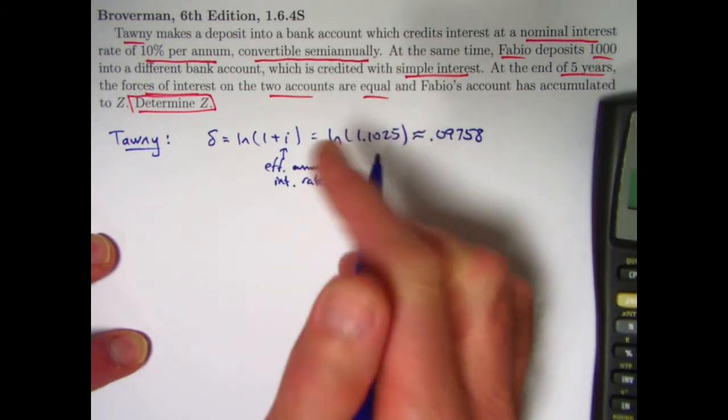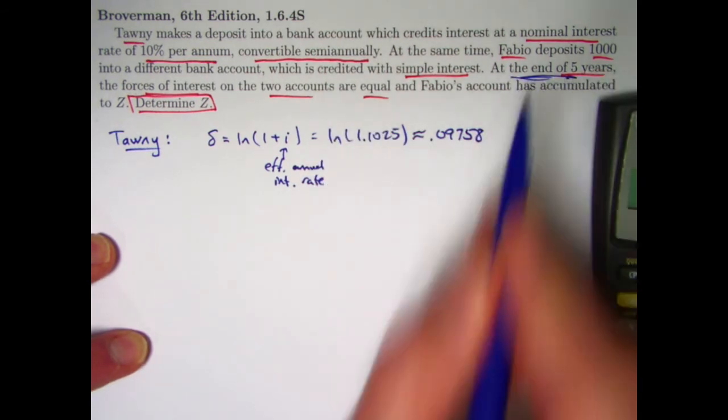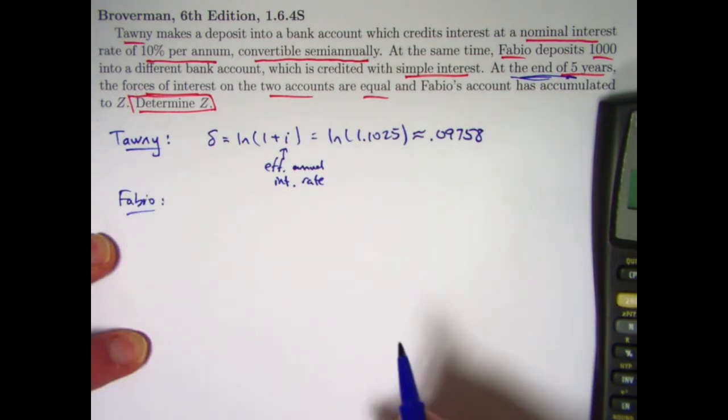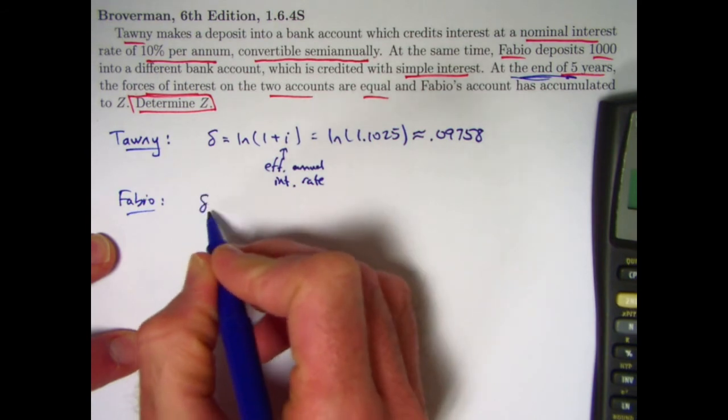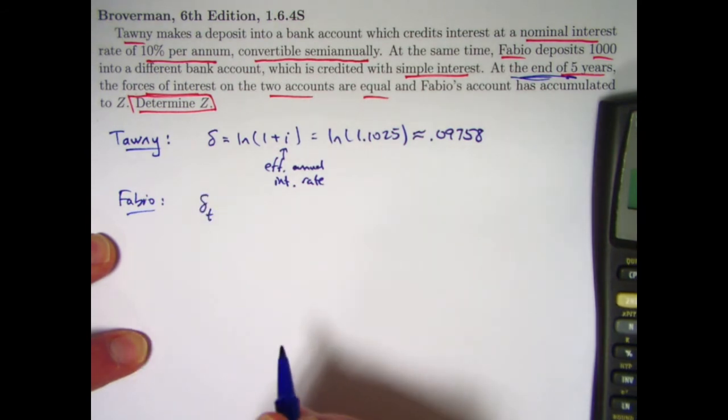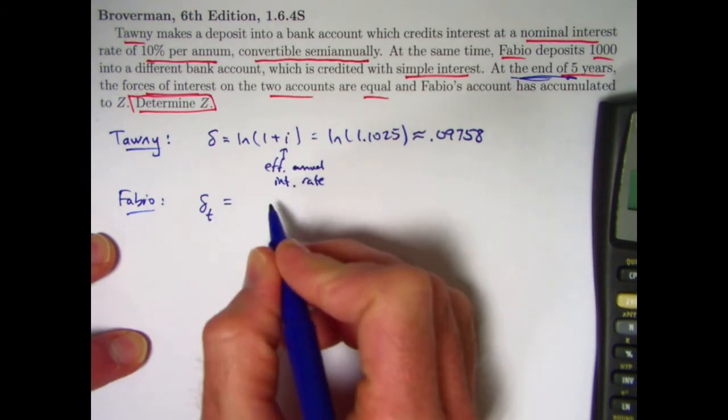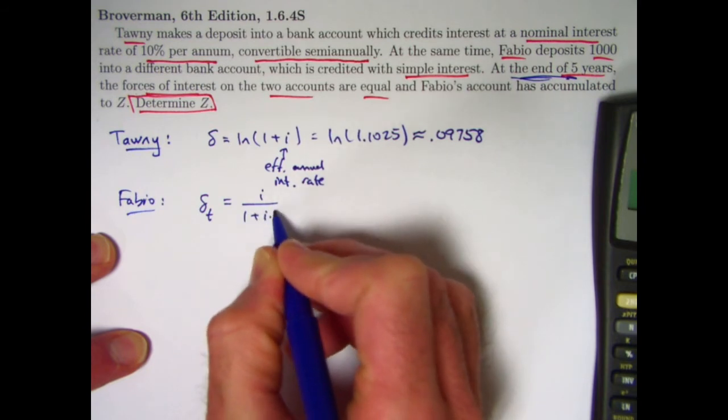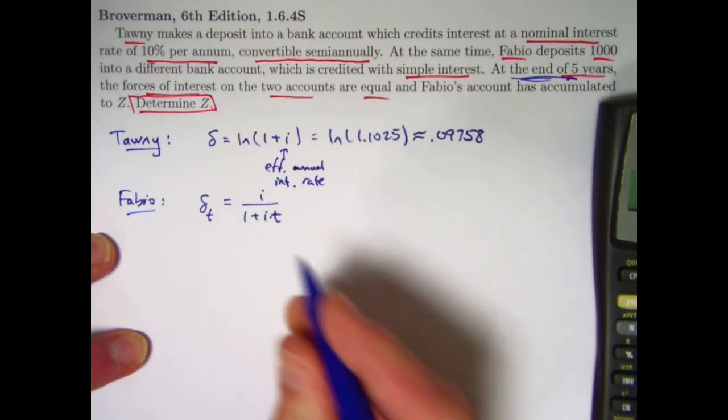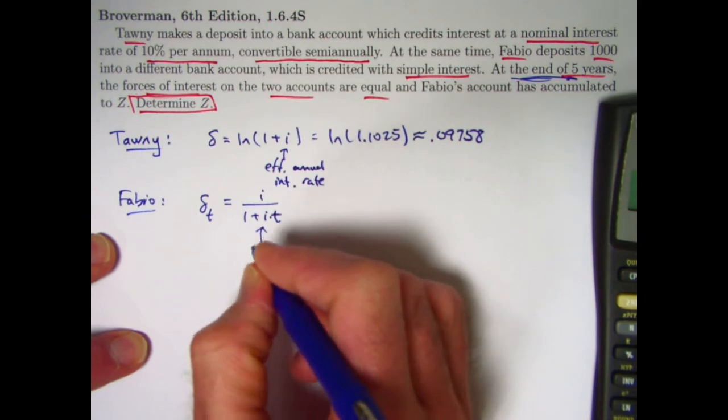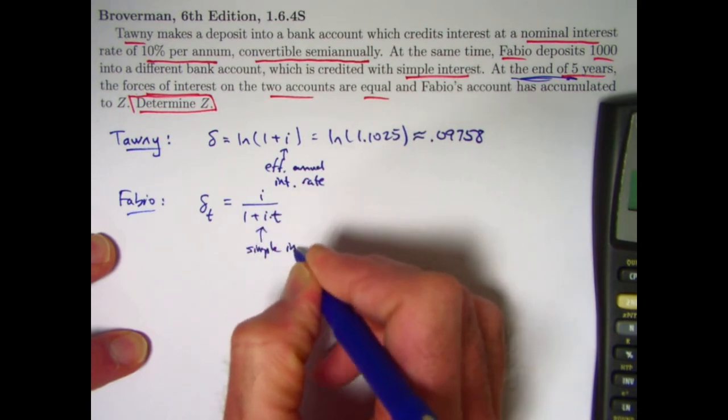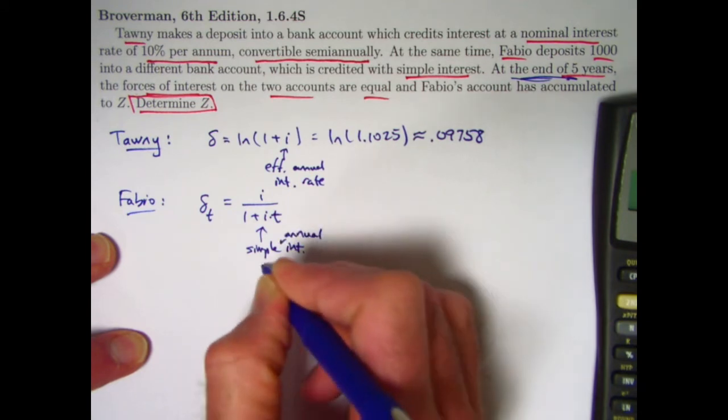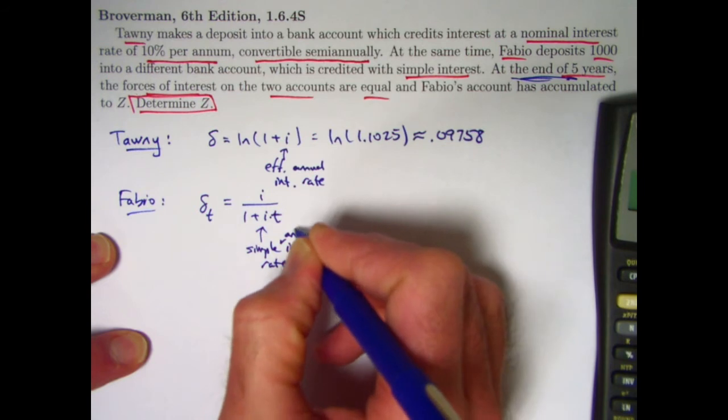Fabio's force of interest is going to be the same as that at the end of 5 years. What is Fabio's force of interest in general, though? In general, with simple interest, it's a function of T. It's not constant. And it's probably worth memorizing that it's I over 1 plus I times T, where I now is the simple interest rate for simple interest. Simple interest rate, that is quoted as an annual rate.